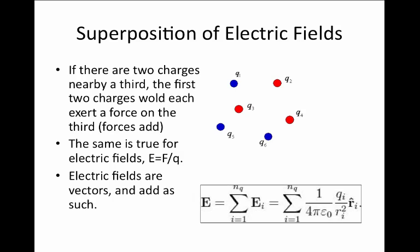The net electric field from a configuration of several charges, like drawn in this picture, will simply be expressed as E equals the sum from 1 over to the number of charges of the individual electric fields exerted by those charges at some location. Each of these will equal 1 over 4π epsilon-0 times the charge of that object, divided by the distance squared to the location, times the unit vector r-hat.